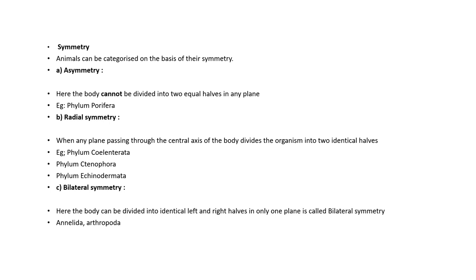Asymmetry is seen in Phylum Porifera. Radial symmetry is seen in Cnidaria, Ctenophora, and Echinodermata. The remaining phyla show bilateral symmetry.